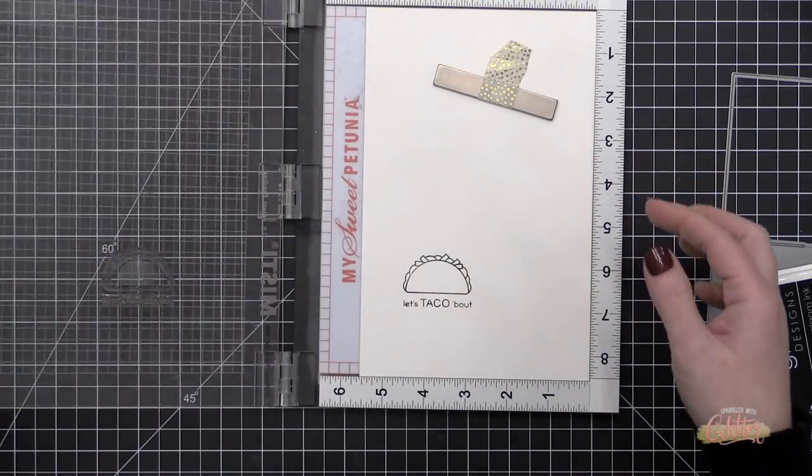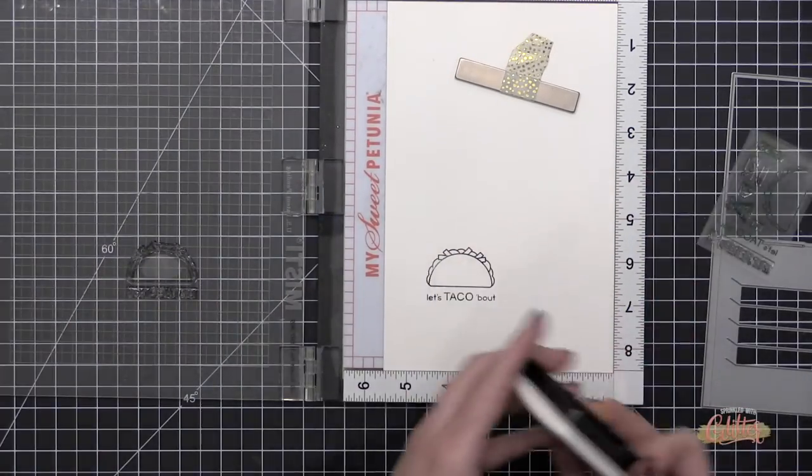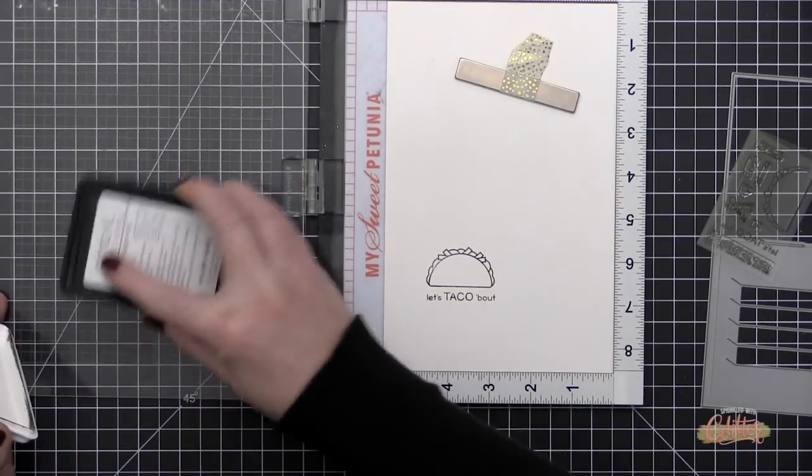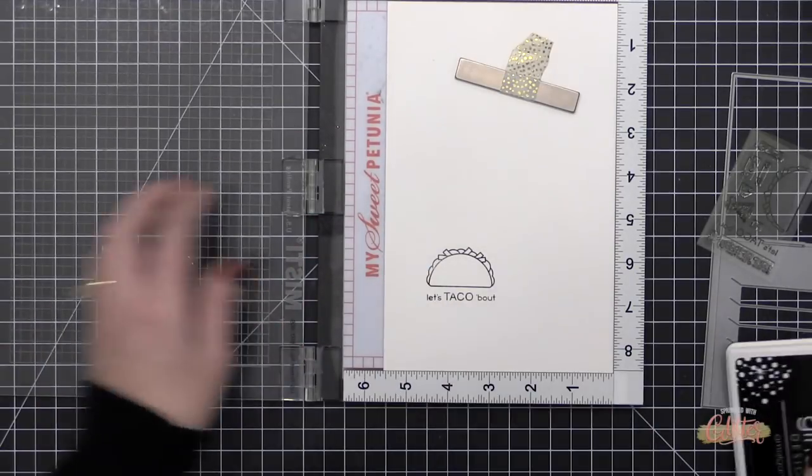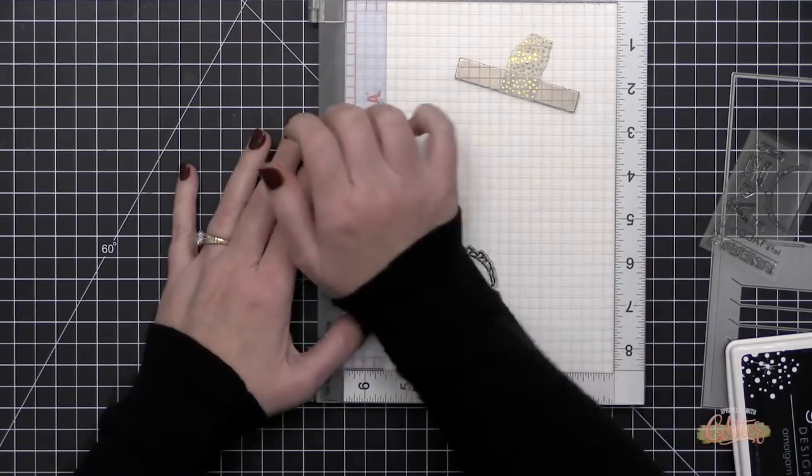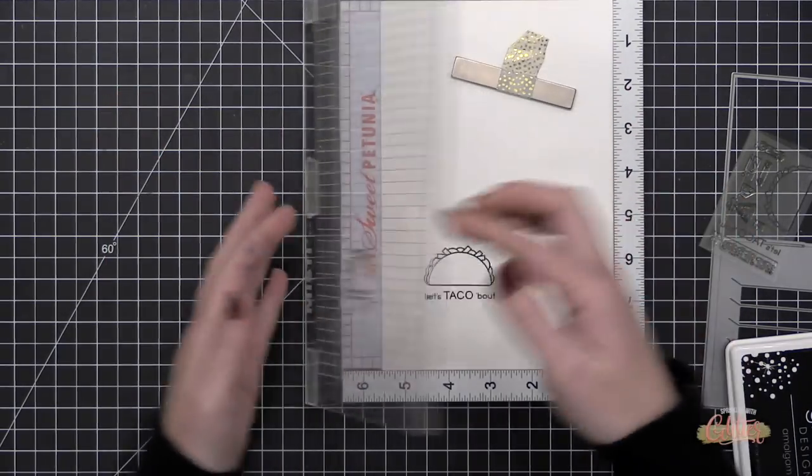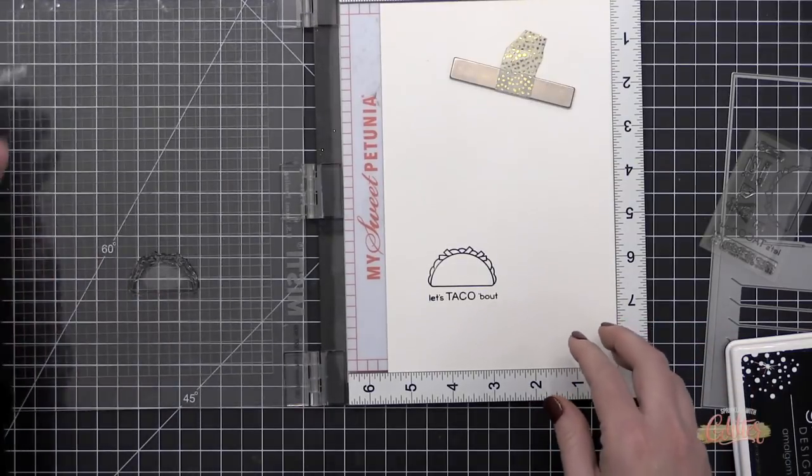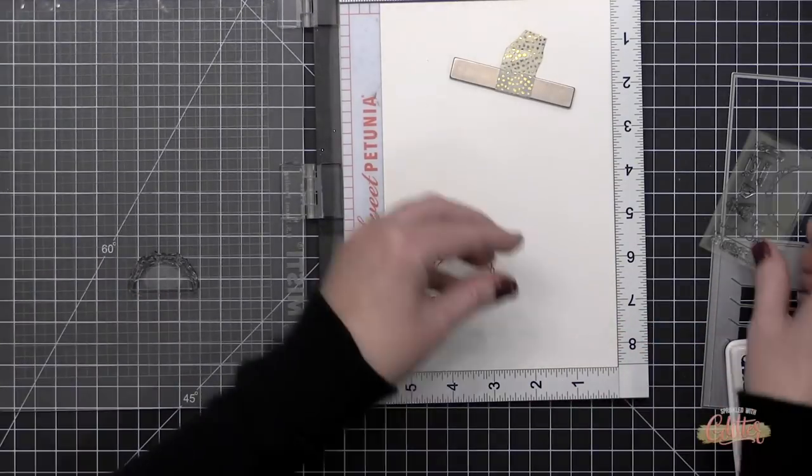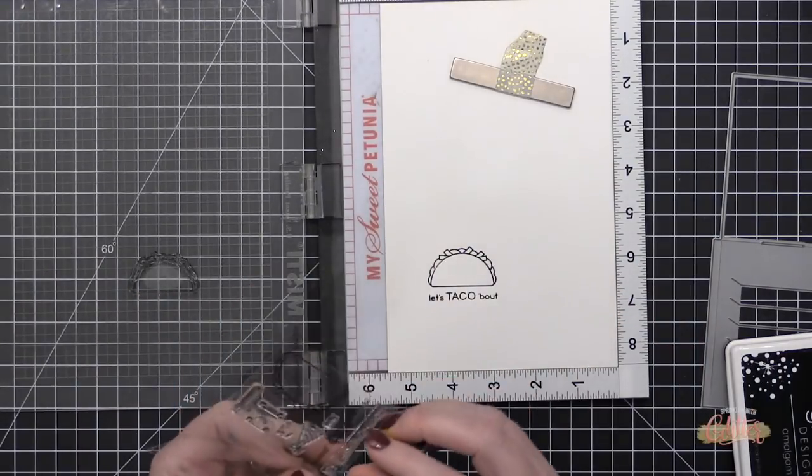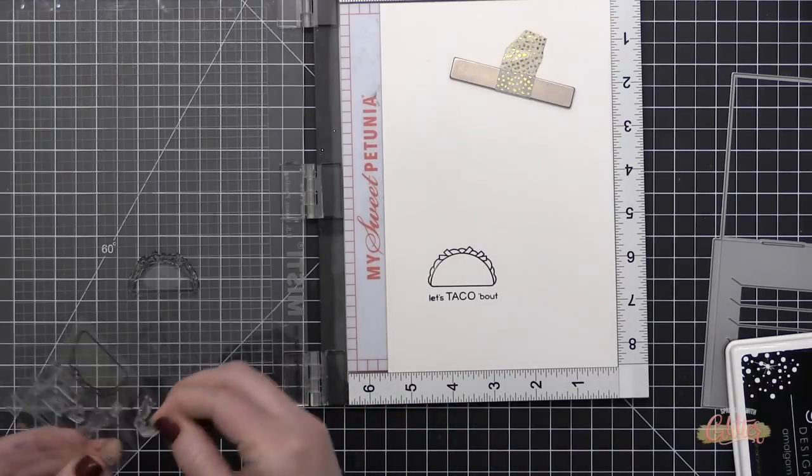I have found that I prefer the 80-pound cardstock for this Magic Picture Changer because I feel like it just functions a little bit easier and the score lines are easier to fold down. Most of the time I will use 110-pound because I prefer the heavier weight, but for this I just feel like it's a little bit easier to assemble if you're using the 80-pound cardstock.